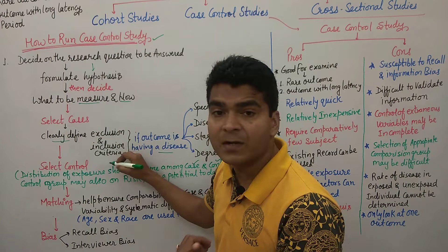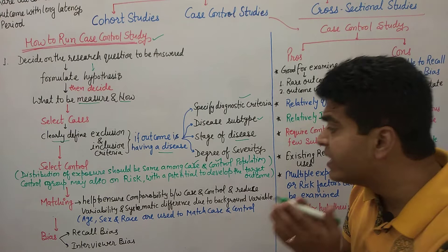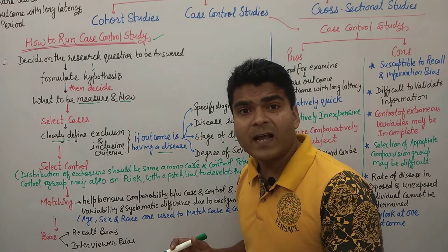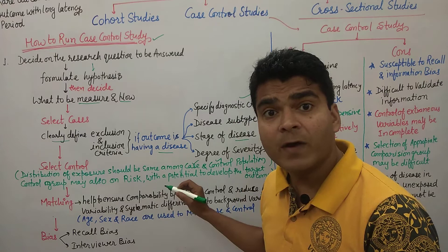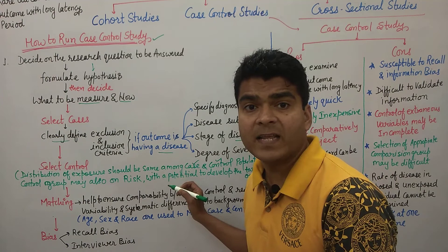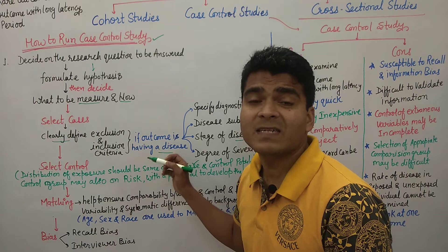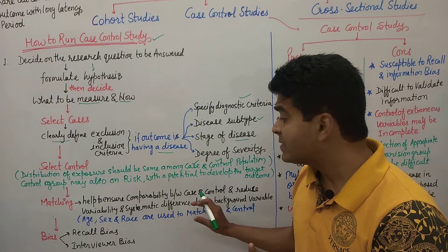Matching is an important criterion after selecting cases and controls. Matching helps ensure comparability between case and control, and it also reduces variability and systemic differences due to background variables. In individual matching, each case is compared with each control.